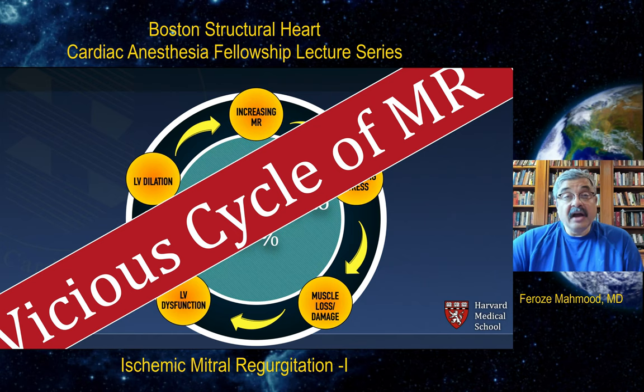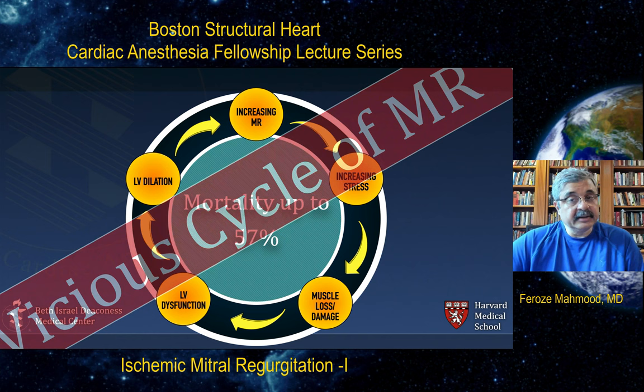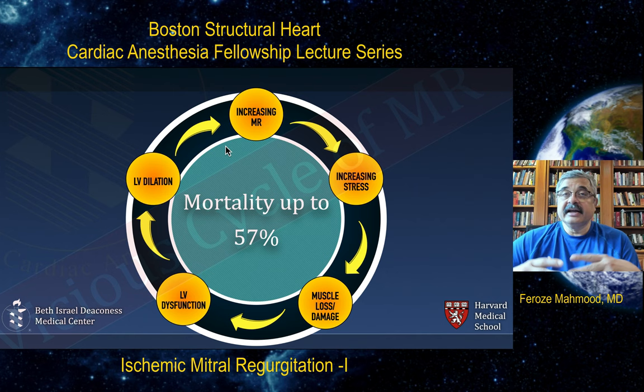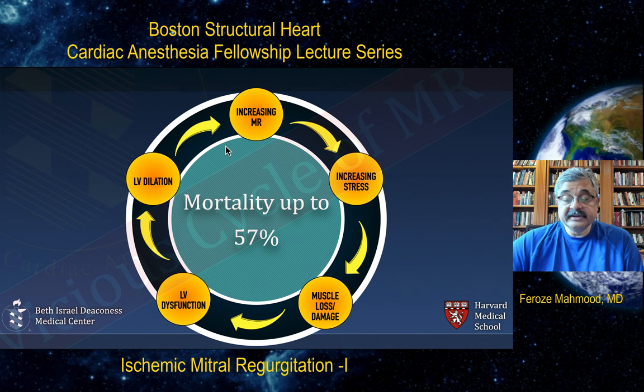It's not an entirely benign thing to have asymptomatic mitral regurgitation, because it creates a vicious cycle: increasing MR leads to increasing stress, which leads to muscle loss and damage, leads to LV dysfunction, LV dilation, and then leads to more MR. As the MR worsens, as the LV dilates, and as LV dysfunction happens over time, the mortality in these patients goes up to 57% if left untreated.